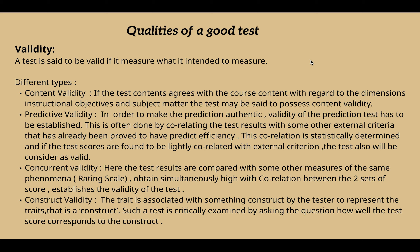Concurrent validity means that the test results are compared with other measures of the same phenomenon, such as a rating scale, obtained at the same time. A high correlation between the two sets of scores establishes the concurrent validity of the test.